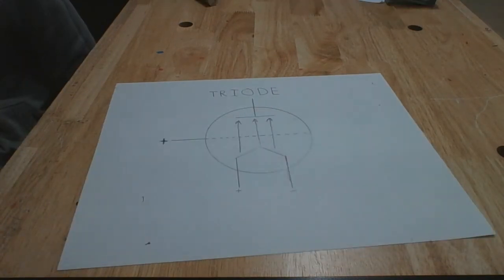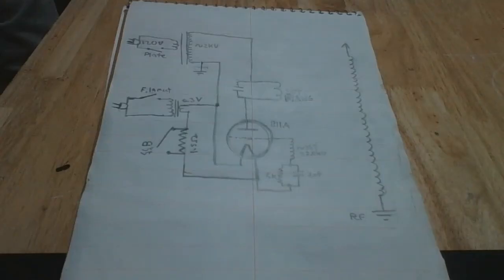Similarly, if you apply a positive potential on the grid, you can cause the tube to conduct even more electrons by attracting electrons. This invention was named the thermionic triode. Now that we understand how vacuum tubes work, let's take a look at the schematic for the Tesla coil.